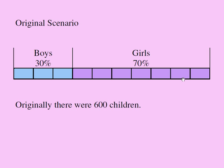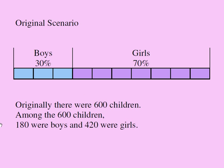Now I need to find out how many boys and how many girls there were originally. If the whole strip represents 600 children, take 600 divided by 10 to get the value of each chunk.